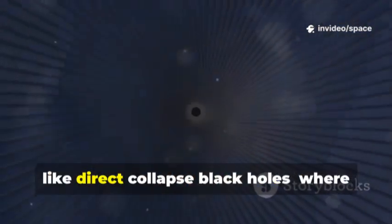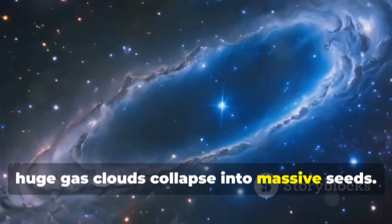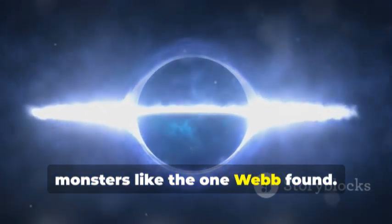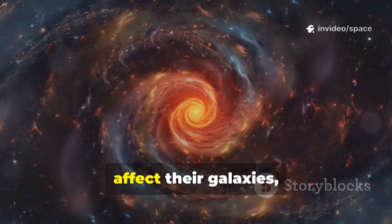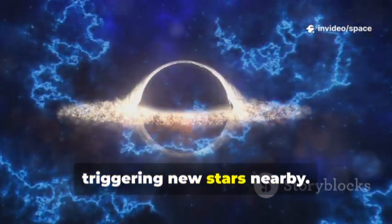This leads to new theories like direct collapse black holes, where huge gas clouds collapse into massive seeds. These seeds could quickly grow into monsters like the one Webb found. Such black holes would dramatically affect their galaxies, shutting down star formation or triggering new stars nearby.